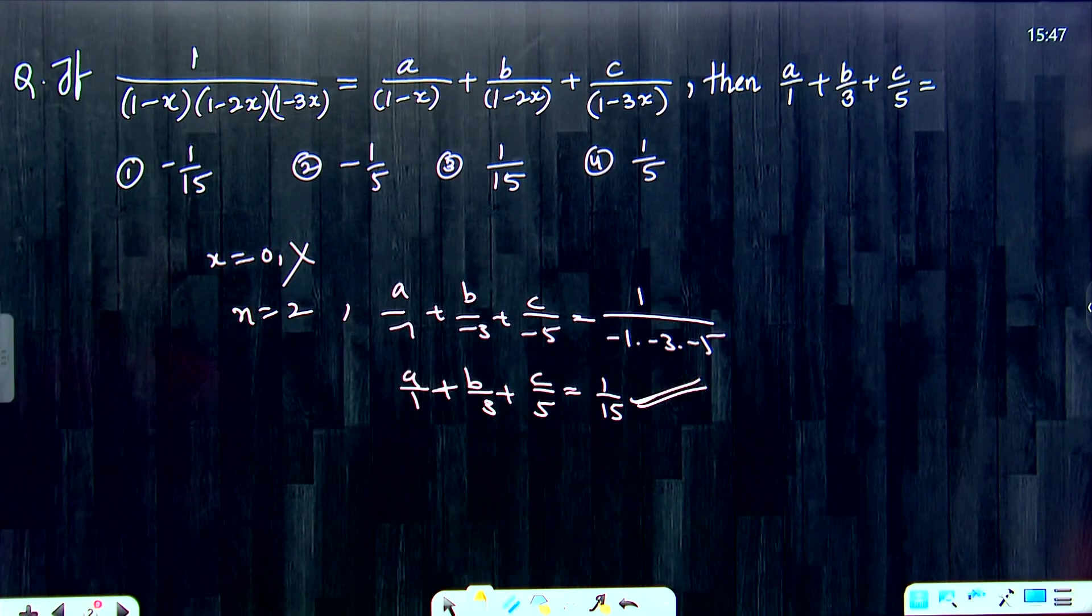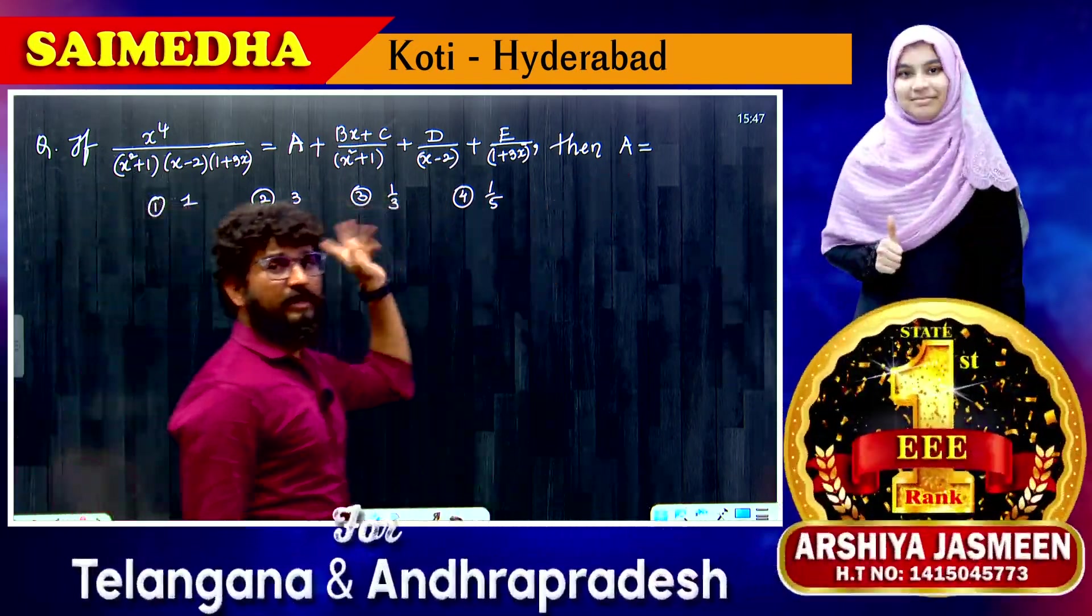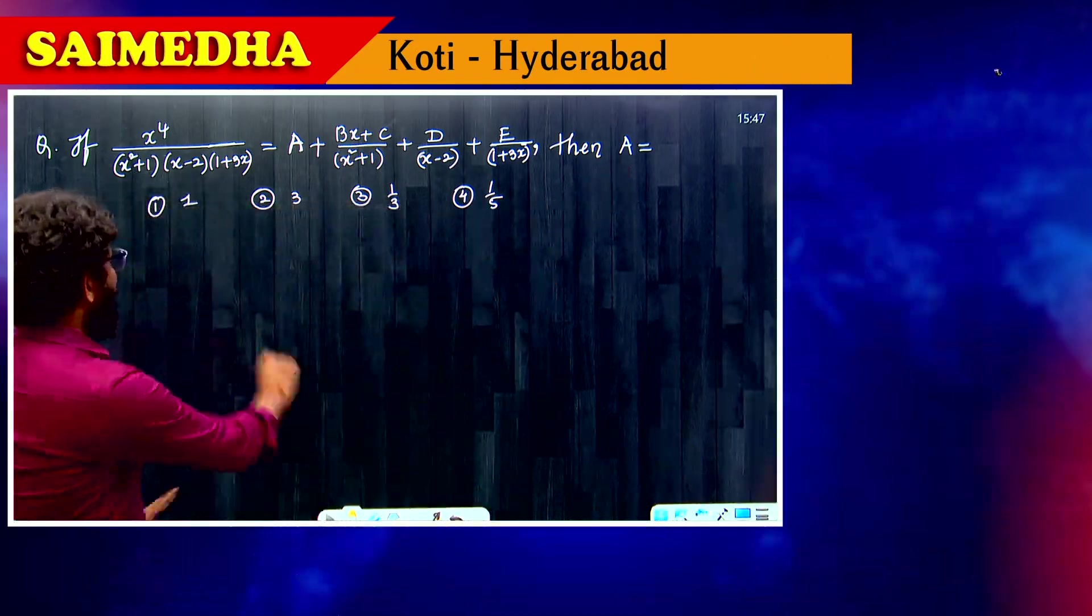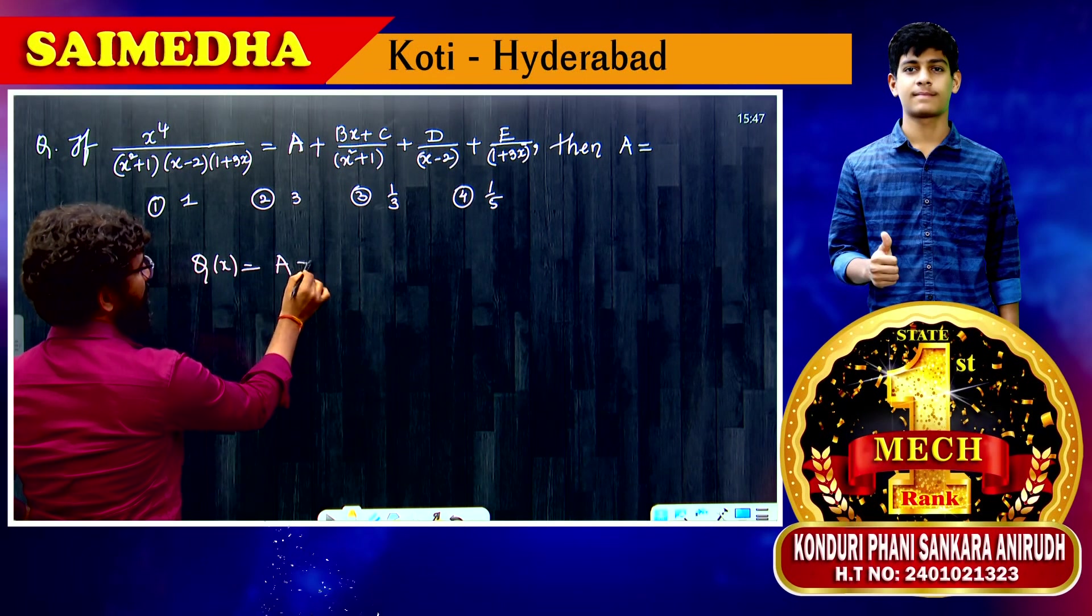Please look at this. This is a partial fraction question. A is nothing but here quotient. Quotient. Quotient direct formula, here is quotient. A is nothing but here, A is very simple.